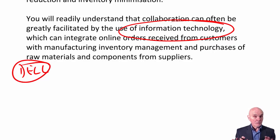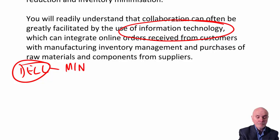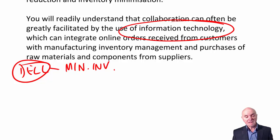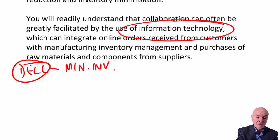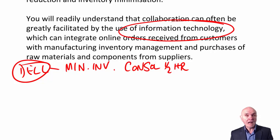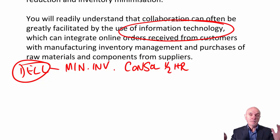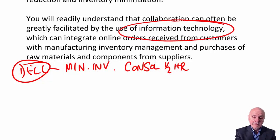The way Dell worked was that they would receive orders continuously over the internet. They consolidated orders basically every half hour — adding them together to know how many hard disks, keyboards, monitors and components they needed to make the computers. Every half hour they would send these totals out to their suppliers, who had one hour to deliver those parts.